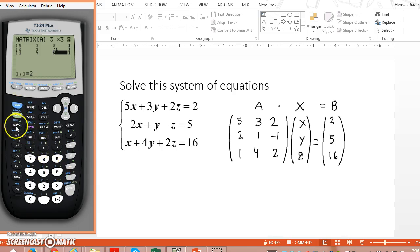So again, I'm going to second matrix, go to edit, I'm going to go down to B. I need a 3x1, right? 3 rows and 1 column. 3, 1. So I'm going to input 2, 5, and 16.